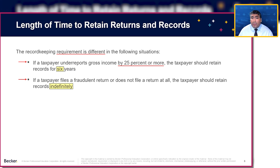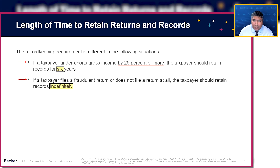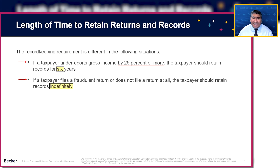Or if you file a fraudulent return, the same applies. So keep those different timeframes in mind: three years is the normal rule; three years or two years — whichever is later — for credit and refund claims; seven years if you're dealing with worthless debts or worthless securities; six years if underreporting gross income by 25% or more, which is usually someone who forgot a W-2 or some income. And lastly, if somebody doesn't file a return or files a fraudulent return, they should retain documents indefinitely because the IRS will definitely come after you at some point, with penalties and interest. Thank you all, keep studying, and I'll see you in the next module.